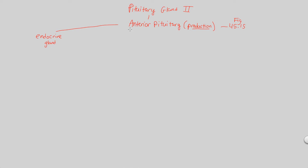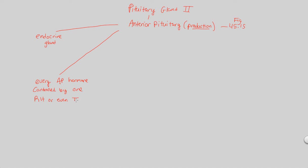Before we get into those hormones, we need to understand the hypothalamic relationship between the anterior pituitary and the hypothalamus. Both go hand in hand — they work very closely together. This is because every single anterior pituitary hormone is controlled and regulated by one releasing hormone, or sometimes an inhibiting hormone, and that comes from the hypothalamus.